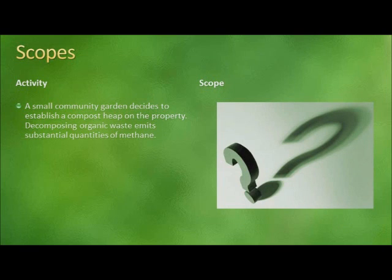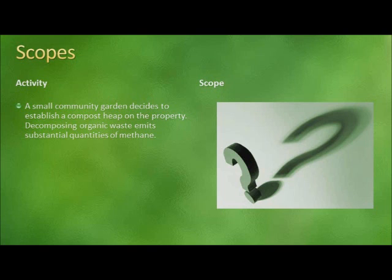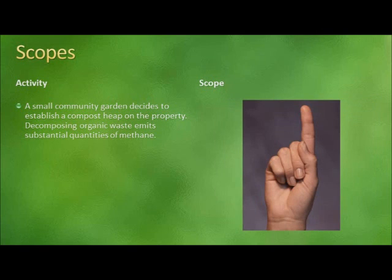In the next example, a small community garden decides to establish a compost heap on the property. Decomposing organic waste emits substantial quantities of methane. Is this scope 1, scope 2, or scope 3? Because the methane is being emitted by an asset of the community garden, this is an example of scope 1 emissions.